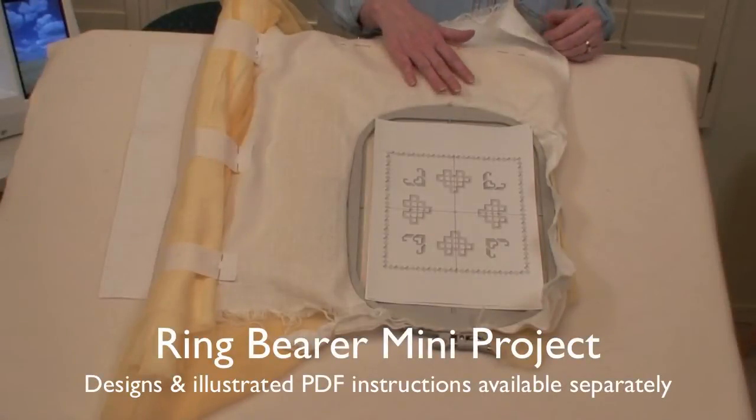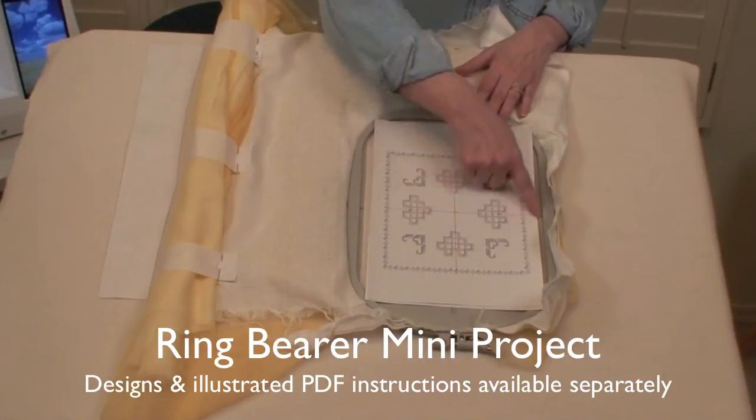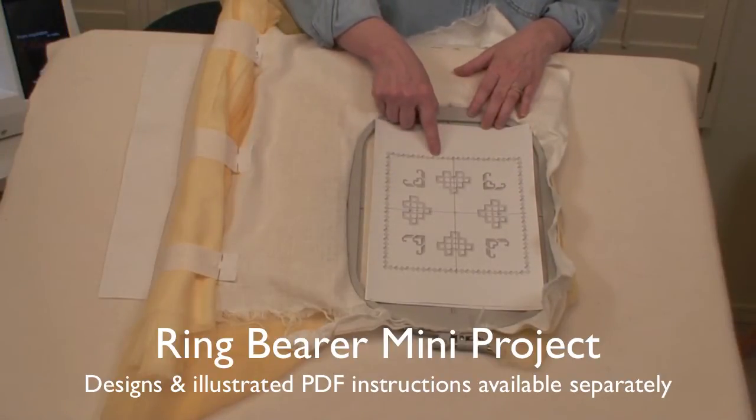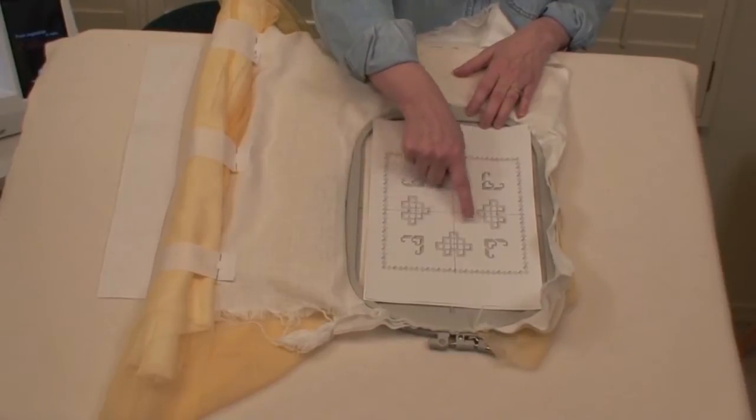So here I have my fabric already hooped and ready for the embroidery. You can see how I've built my design. This may be a little clearer than looking at the pillow. And you can see these four elements.